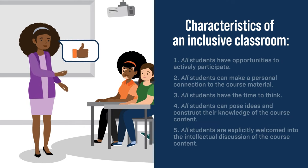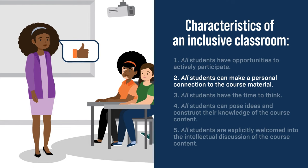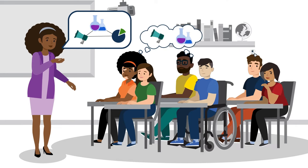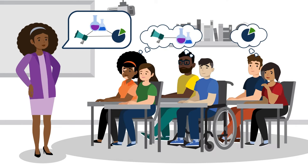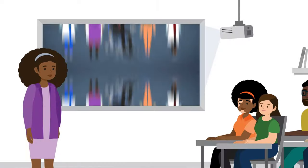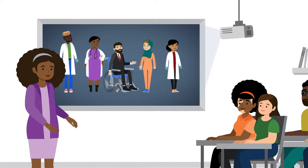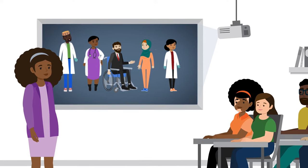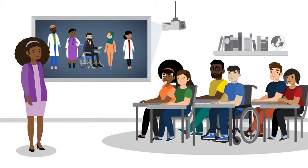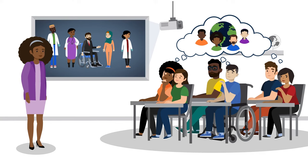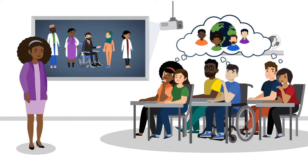Let's move on to another characteristic of an inclusive classroom: providing all students with the opportunity to make a connection to the course material. Students will feel more motivated to understand the material if they can personally connect to it and see how it applies to something they care about. Students have different interests, values, and backgrounds, so incorporating culturally diverse role models and values into your course helps more students to see themselves in the discipline.